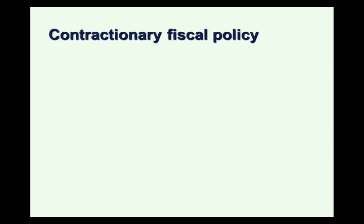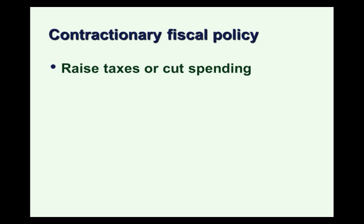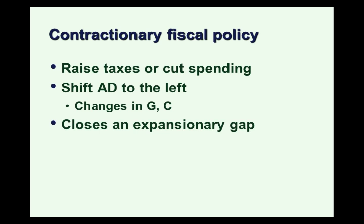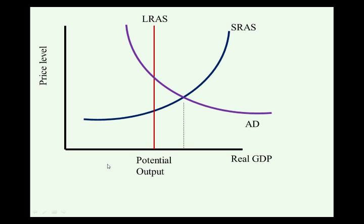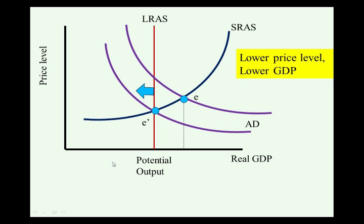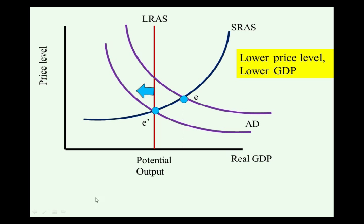Contractionary fiscal policy would move us in the other direction. We would raise taxes or cut spending to shift aggregate demand to the left and close an expansionary or inflationary gap. So with an expansionary gap — where we have a short-run equilibrium that exceeds potential output — contractionary fiscal policy shifts aggregate demand to the left and we return to long-run equilibrium, resulting in a lower price level and a lower GDP at potential output.